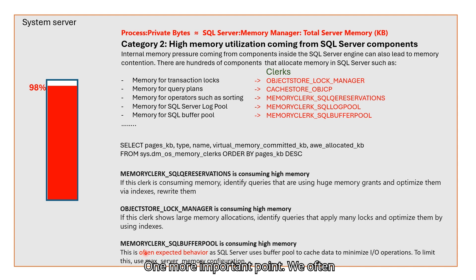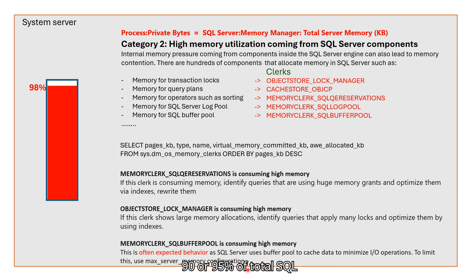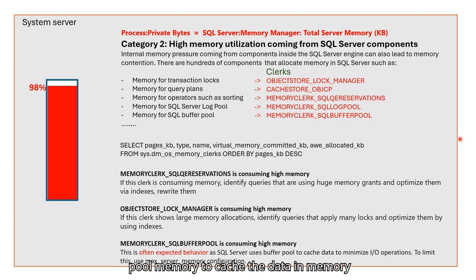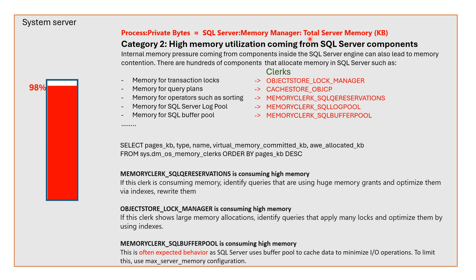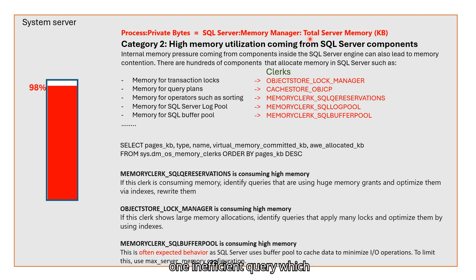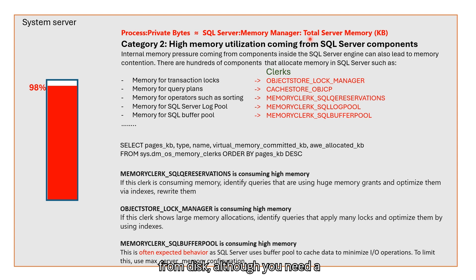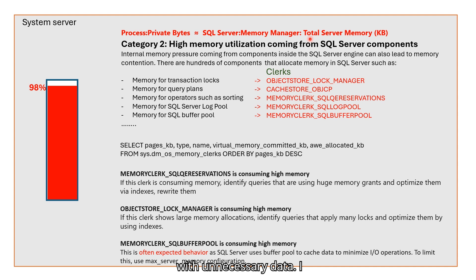One more important point: we often find SQL Buffer Pool related clerk consumes a lot of memory — sometimes 90 or 95% of total SQL memory. This is often expected behavior and you shouldn't worry, because SQL Server uses Buffer Pool memory to cache data in memory and tries to minimize IO operations to improve performance. There are some cases where a large Buffer Pool might be an issue — for example, one inefficient query bringing all data to memory from disk when you only need a few rows, populating Buffer Pool cache with unnecessary data. I recommend fine-tuning such queries and creating indexes.